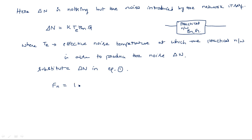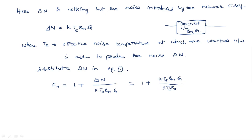Substituting, we get: Fn = 1 + ΔN / (KT₀BN·G) = 1 + (KTE·BN·G) / (KT₀BN·G). Rearranging, this simplifies to Fn = 1 + TE/T₀. Therefore, the effective noise temperature TE is equal to (Fn − 1) × T₀. This is the effective noise temperature expression.